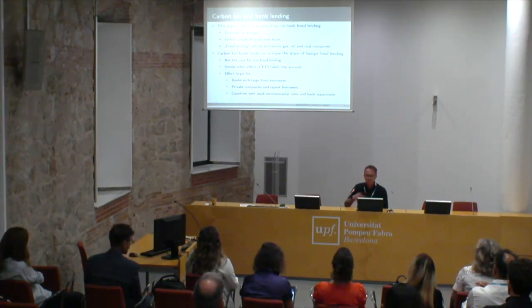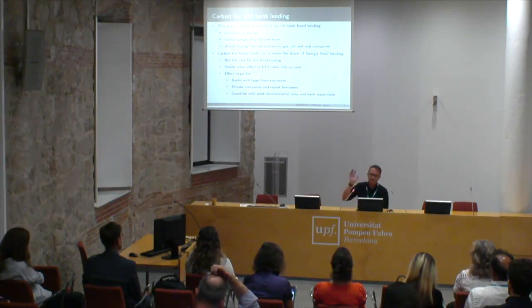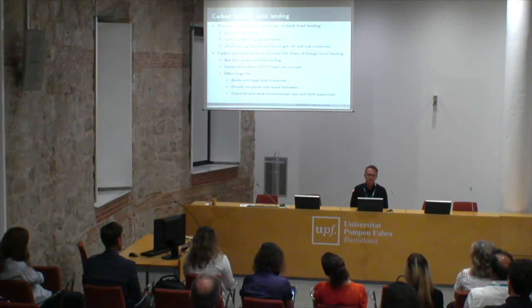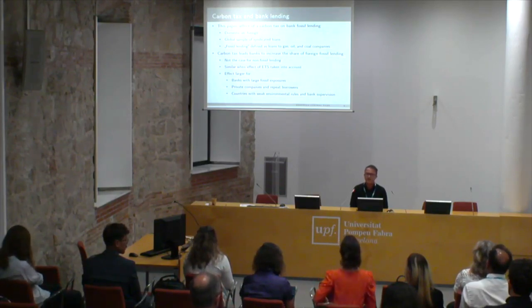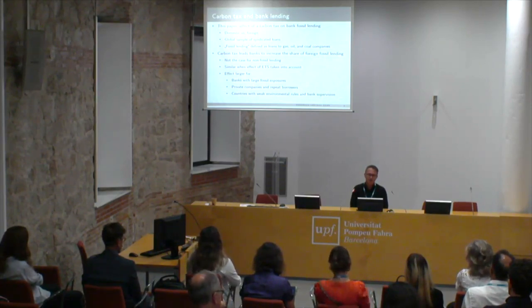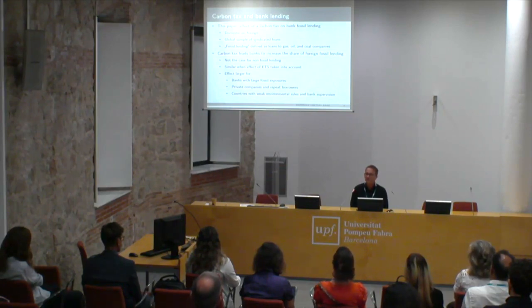This is an immediate confirmation of concerns about carbon tax arbitrage — and it is specific to fossil lending, not non-fossil lending broadly. The effect is similar when introducing an ETS instead of a carbon tax, which makes sense because the European ETS currently prices carbon at around 100 euros per ton — more than what economists call optimal.